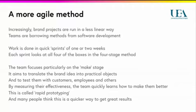The team focuses on making things — the aim is to translate the brand idea into practical objects every sprint, and testing those objects with customers, employees, and others by measuring their effectiveness. The team quickly learns how to make them better, so that in the next sprint they can create something that works better. This is called rapid prototyping — the emphasis is not on thinking, thinking, thinking, but on quickly moving to action, testing it, and improving the thinking. Many people think this is a quicker way to get great results.